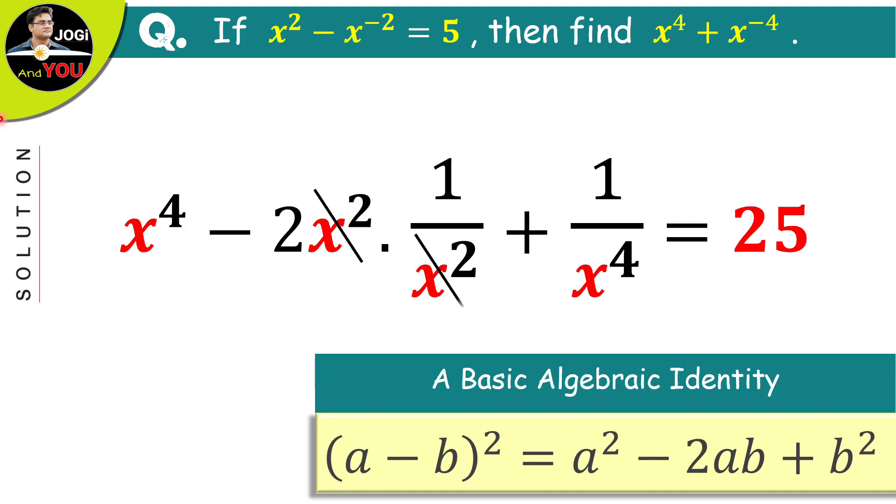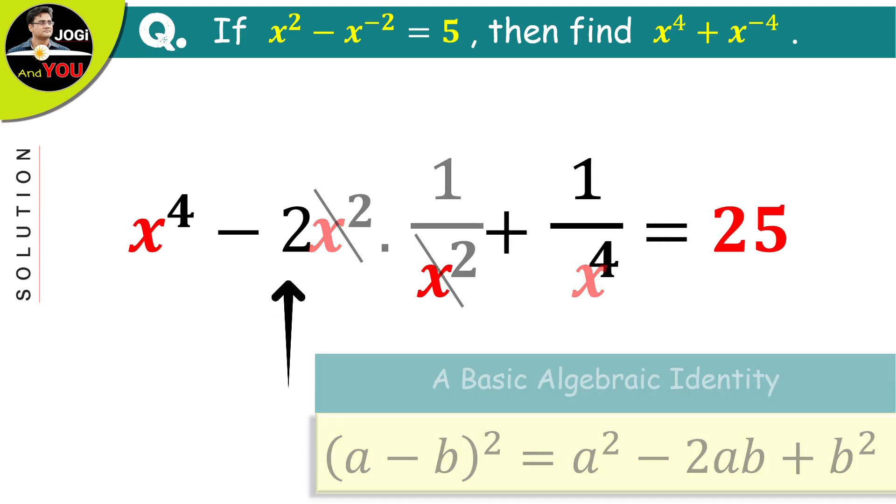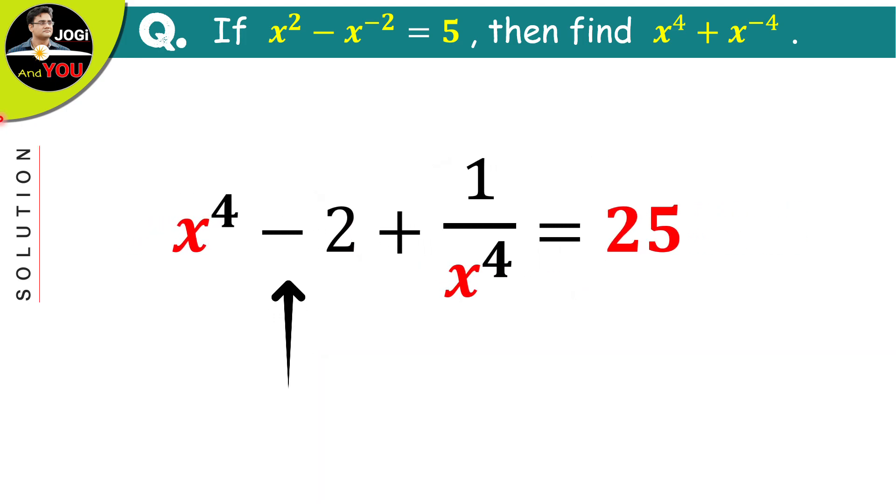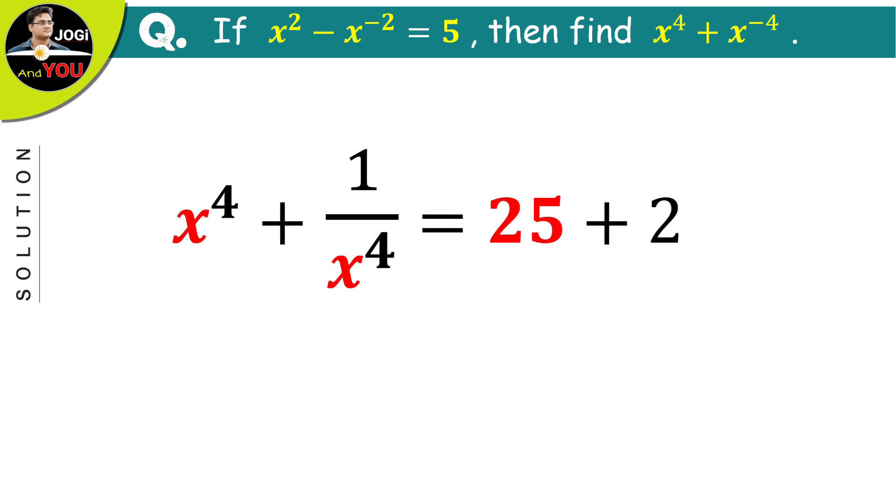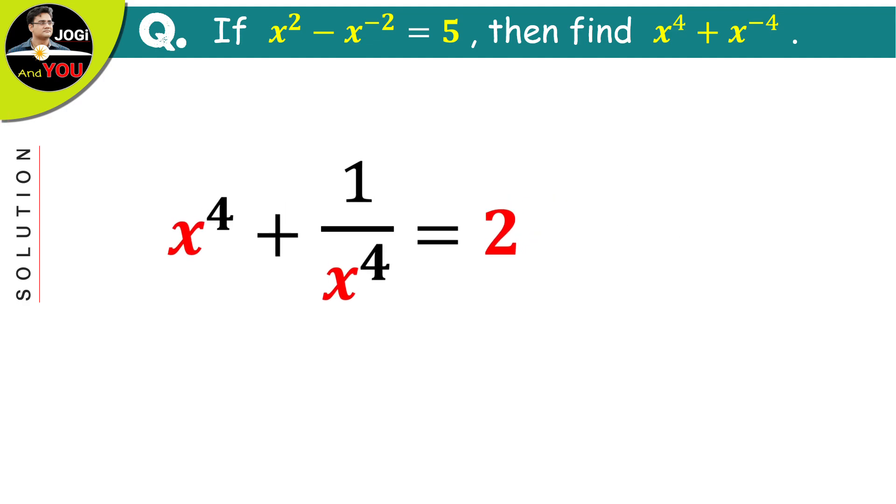x square to x square cancels and we will have 2 here in the middle. Rearrange it a bit by transferring this 2 to the right side and it becomes x to the power of 4 plus 1 over x to the power of 4 is equal to 25 plus 2. After calculating this right side we will have 25 plus 2 is equal to 27.